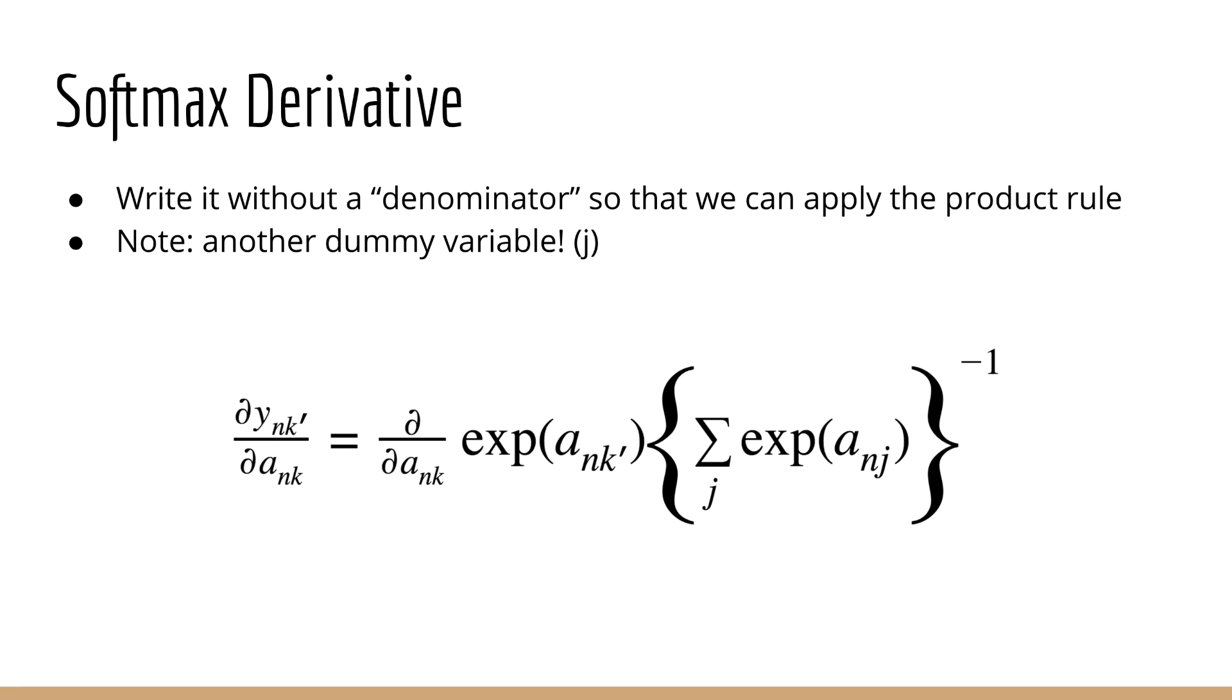Okay, so that's nice, but how does the math actually work out? Since this is the only non-trivial derivative, and we're already talking about it, let's do this one first. Personally, I like to apply the product rule, but you can also apply the division rule of calculus if you've memorized it. In other words, it's helpful to move the denominator to the top and just take it to the power of negative one. Now again, you can see that we're using yet another dummy variable, this time j, because we don't want it to interfere with the variables outside the sum, which are k prime and k.